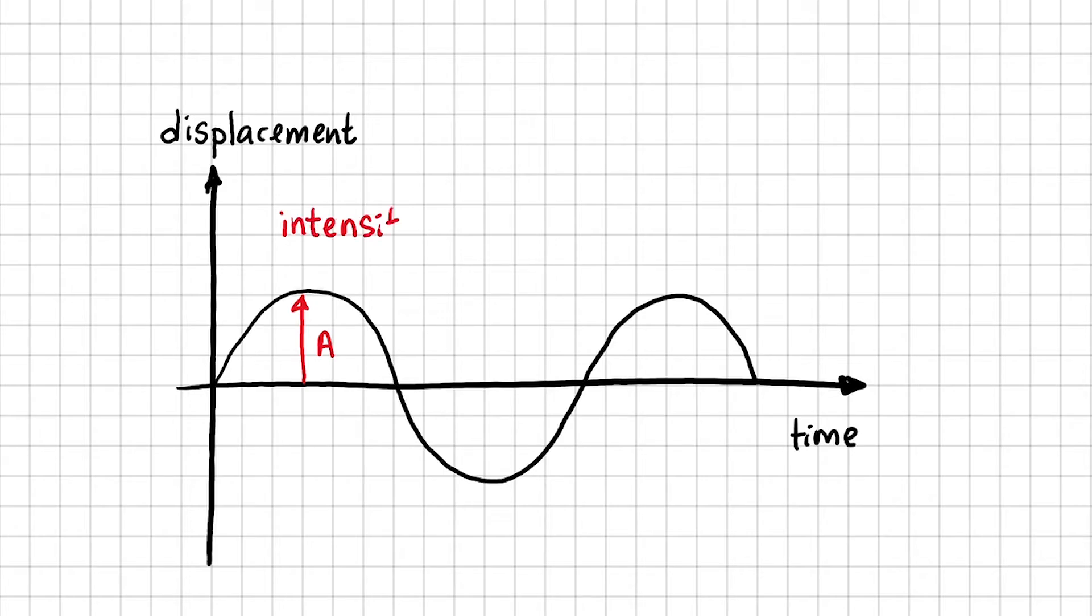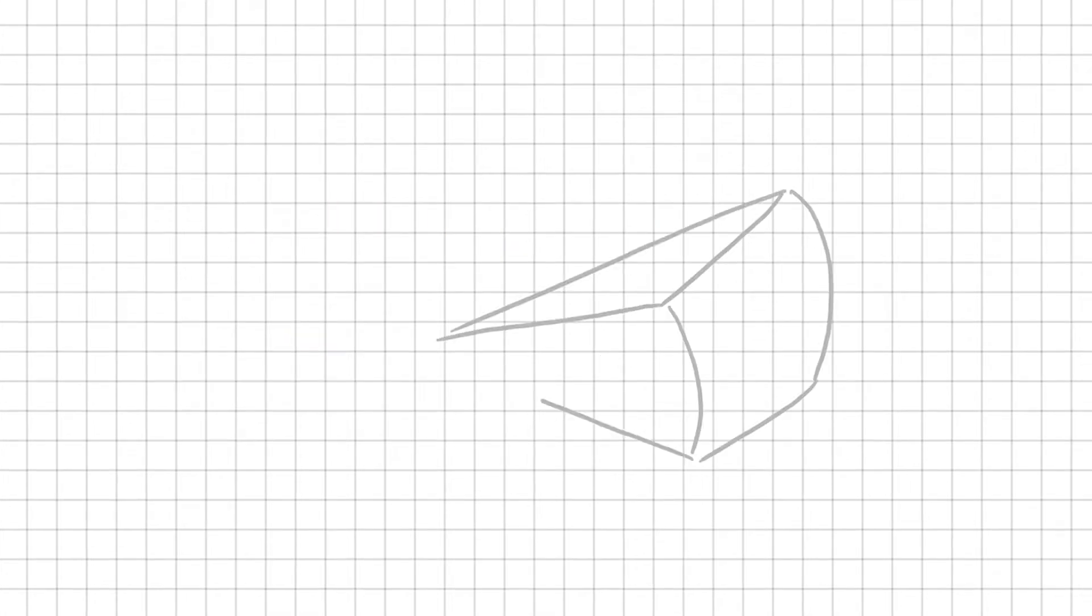The intensity of a wave is proportional to the amplitude squared. What exactly does intensity mean? The intensity of a wave is defined as the amount of energy that passes through a given area in a certain amount of time, or I can write it as power over area.